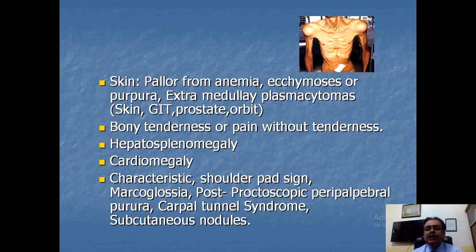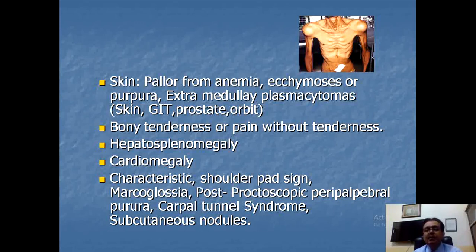On skin examination, the patient may have pallor due to anemia and ecchymosis or purpura due to thrombocytopenia. Since this is fundamentally a disease of the bone marrow, the patient may have pancytopenia — if the red cell series is affected, only anemia; if WBCs are affected, neutropenia; if platelets are involved, thrombocytopenia — leading to ecchymosis or purpura.